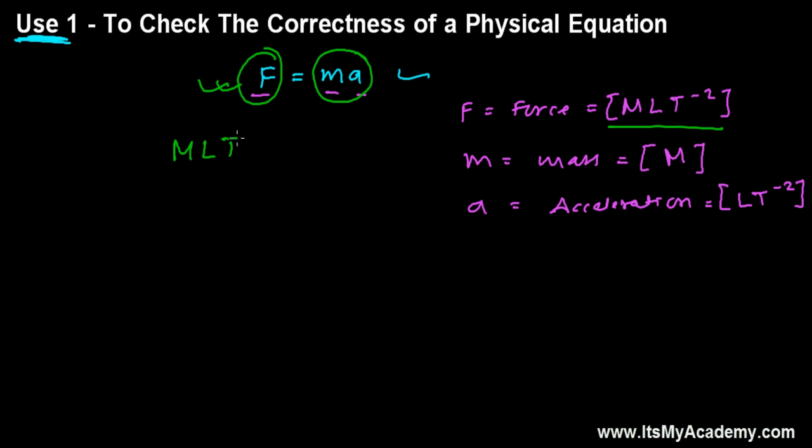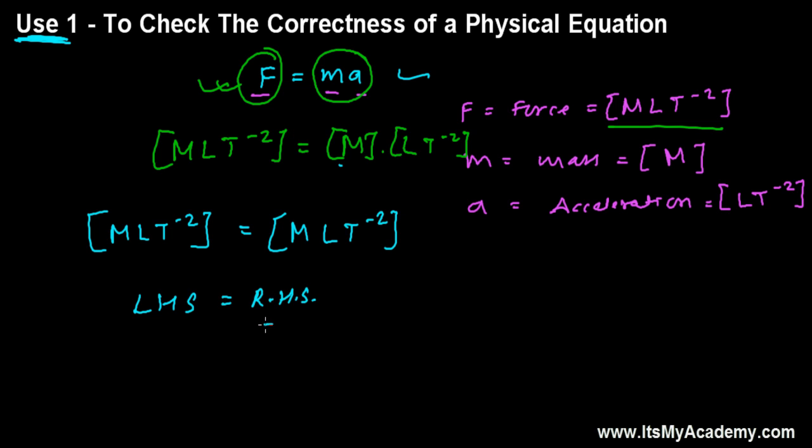Let's put the values. The dimension of F is MLT^-2, and on the right-hand side, dimension of mass times dimension of acceleration - that's M times LT^-2. What I'm going to get? MLT^-2 is again MLT^-2. So our left-hand side is dimensionally equal with our right-hand side. Hence F equals MA is a correct physical relation.